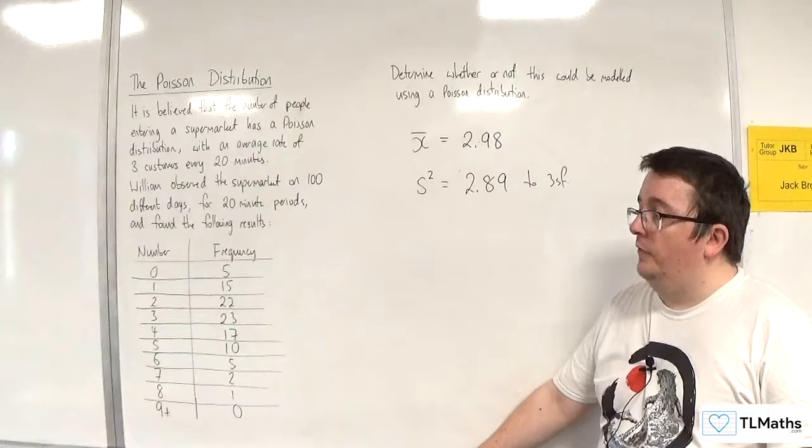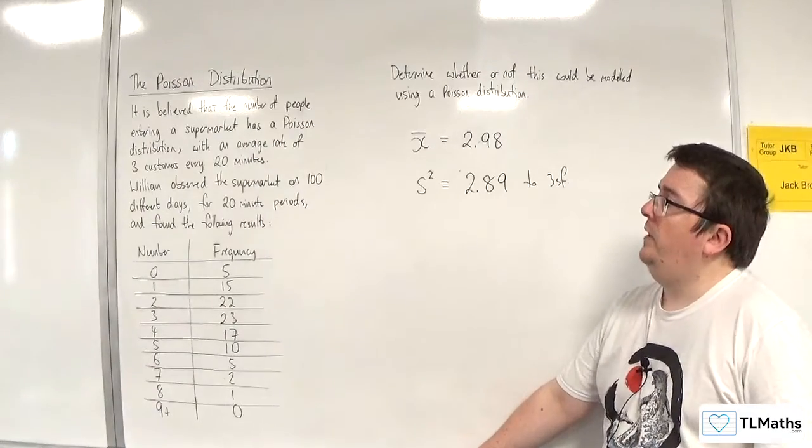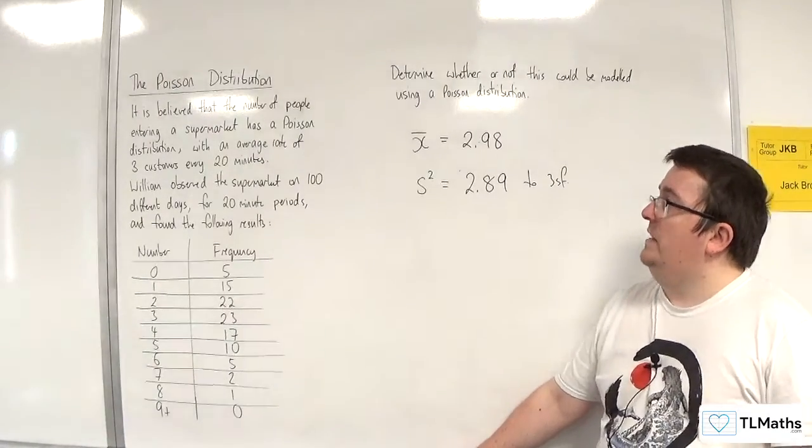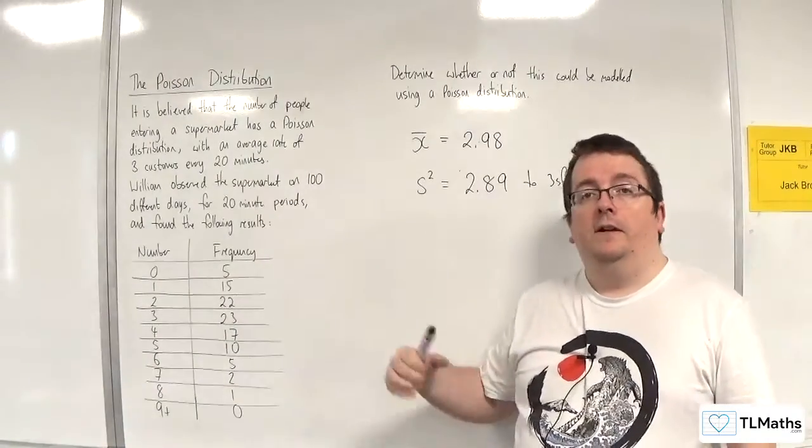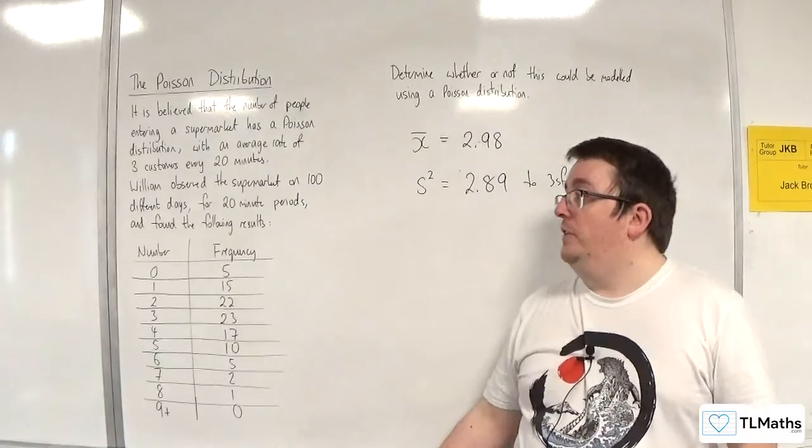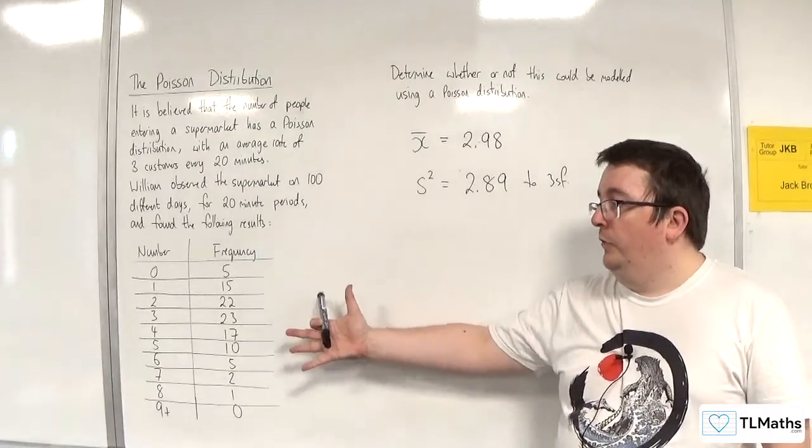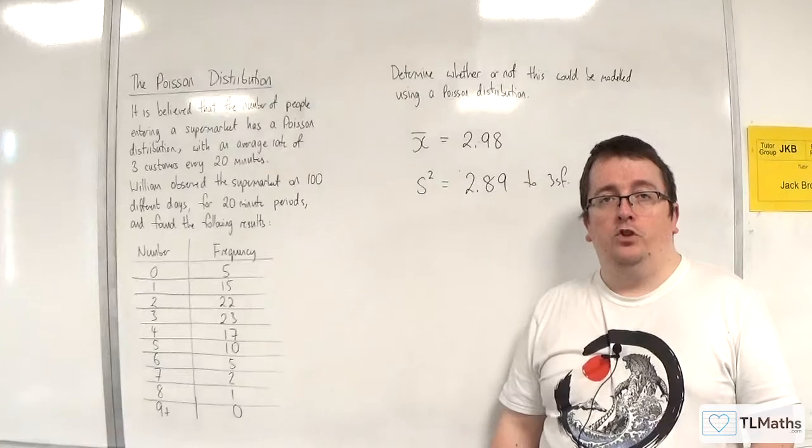Now, obviously, we're not doing the goodness of fit test on it. But we can at least bring these two points in here and use that as evidence to support that this does appear to be a Poisson distribution.